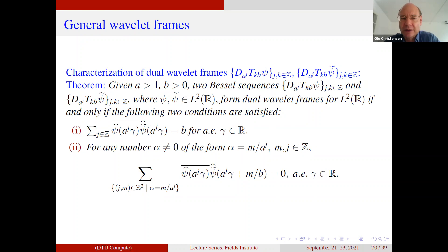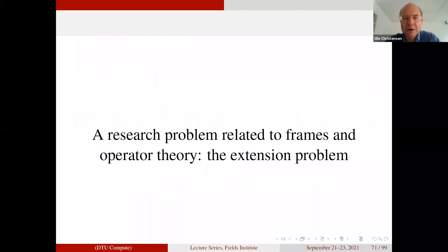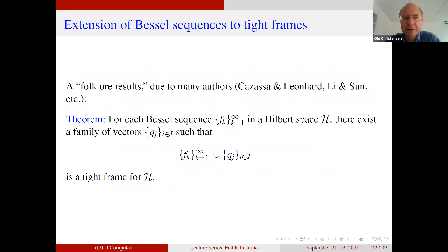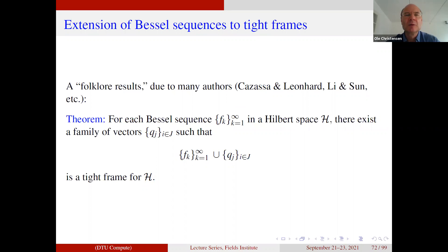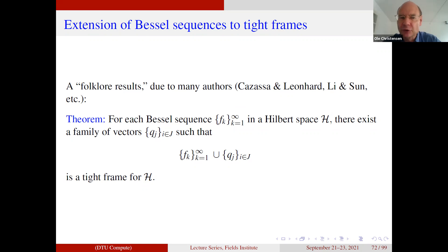This leads to an open problem, but first a folklore result: if you start with any Bessel sequence, which might not have any reconstruction property or even be complete, you can always find a collection of vectors to add to the given Bessel sequence to obtain a tight frame. You can always extend your Bessel sequence to a family that is a tight frame. The general procedure for doing this is not something you want to do in practice because it would imply easily constructing tight frames starting with almost everything — it is quite involved in practice, though theoretically it is not hard to prove.